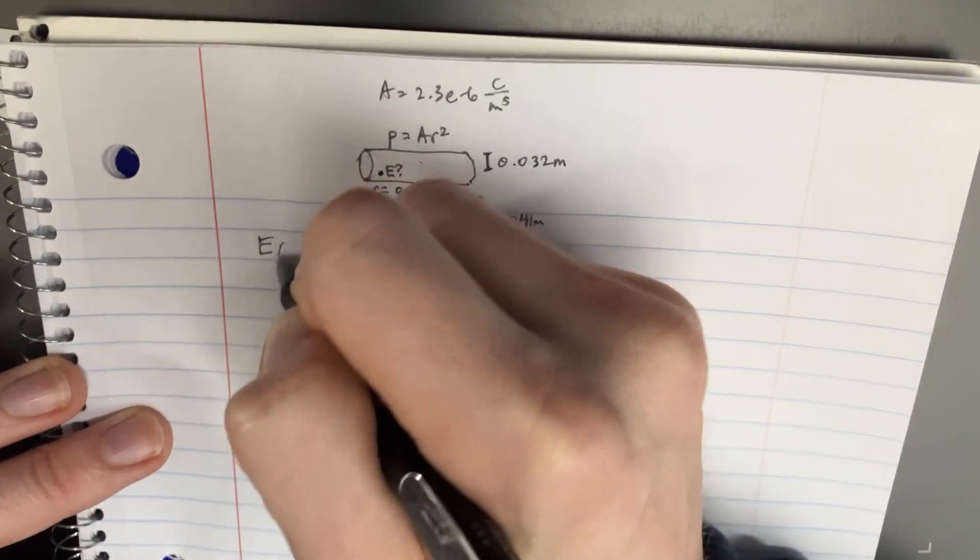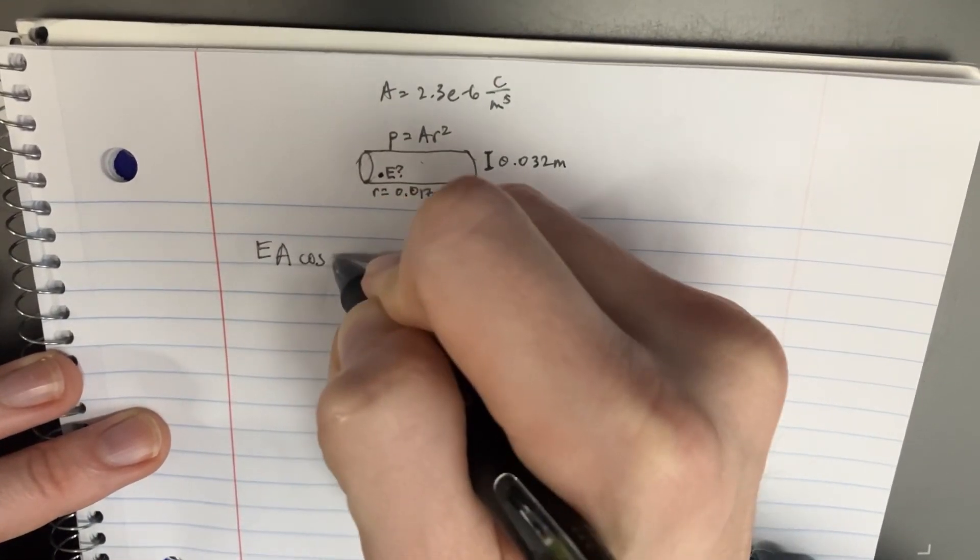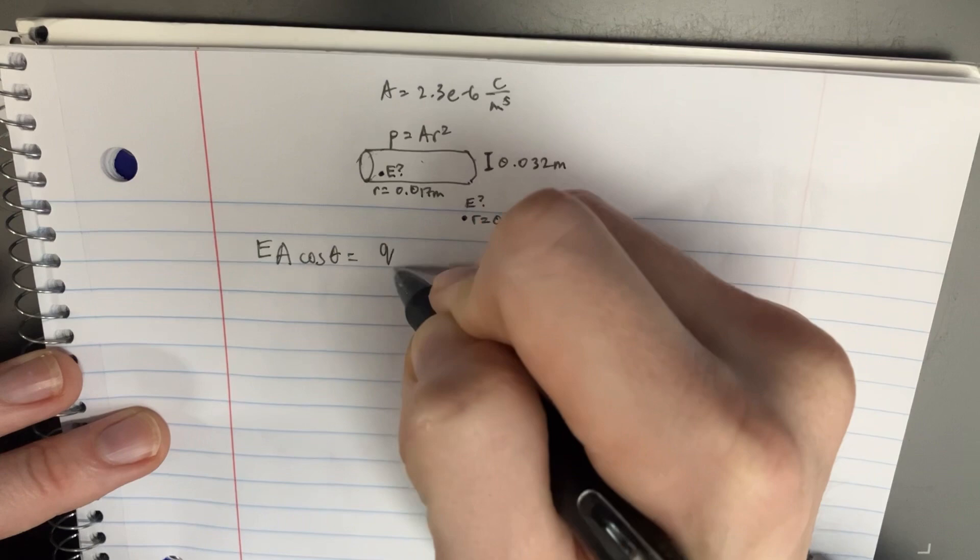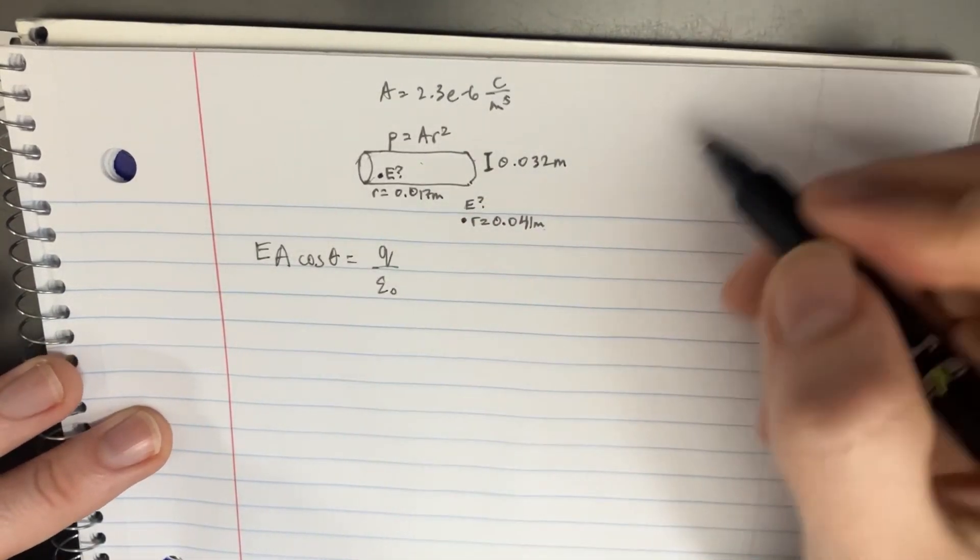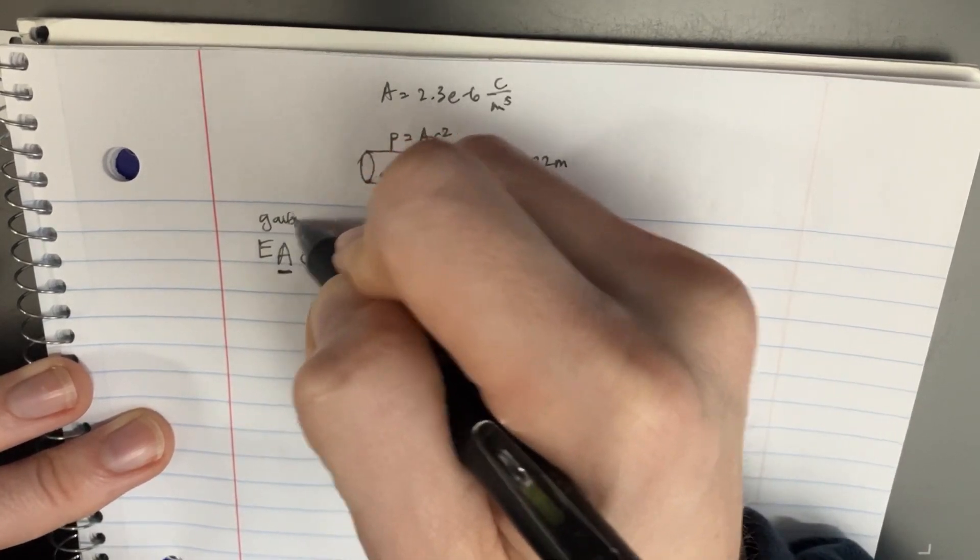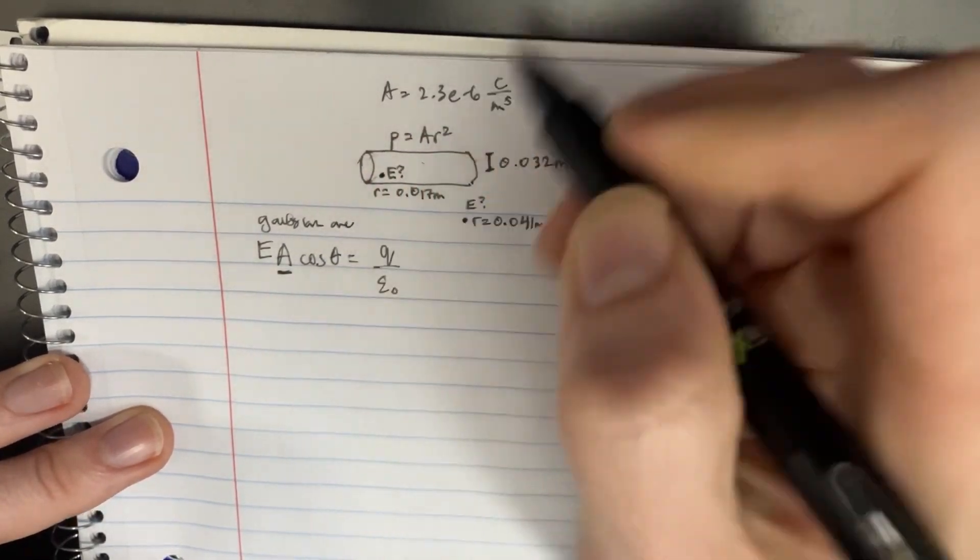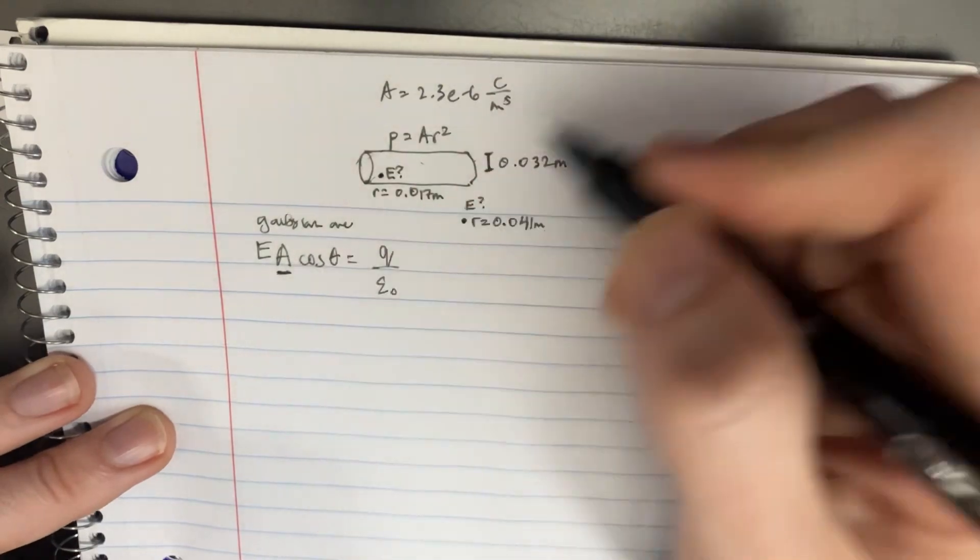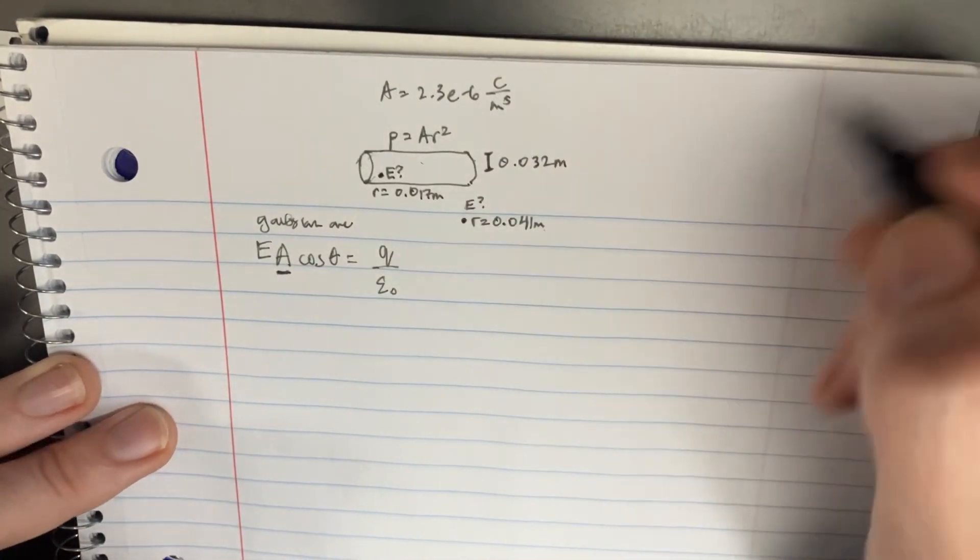But in both cases, we're going to be using this formula, which is the Gaussian surface equation E times A equals charge over epsilon naught. And this is going to be the surface area of the Gaussian area that we're going to create. So just keeping that in mind is going to help us to solve for both situations.